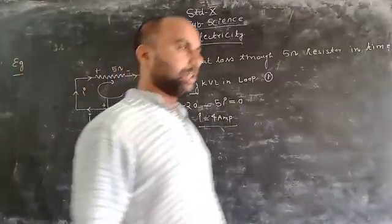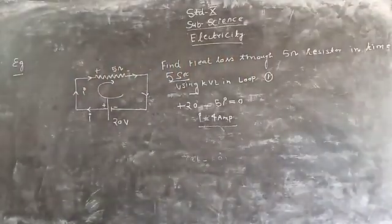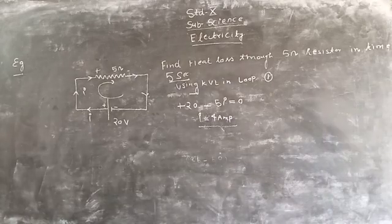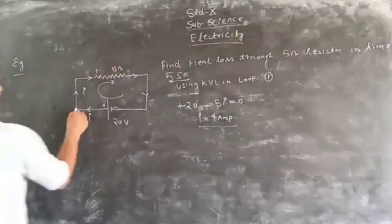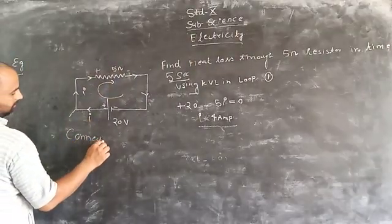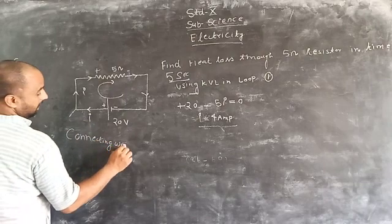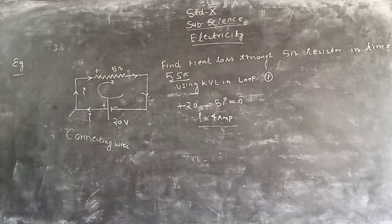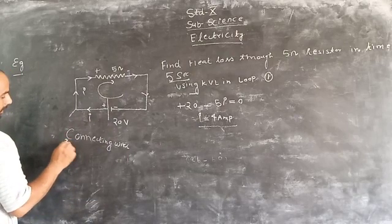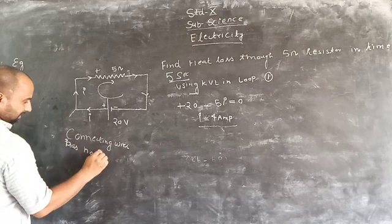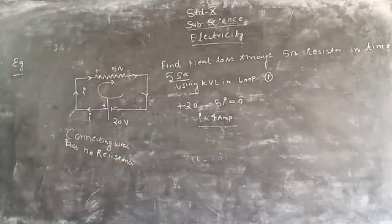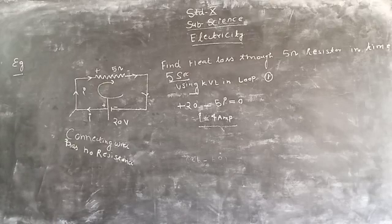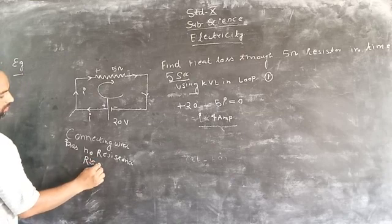We have to conclude that the current flowing in the loop is 4 amperes. Now how much heat is lost through the circuit? The connecting wires have no resistance. If connecting wire has no resistance, then the resistance is approximately equal to 0.